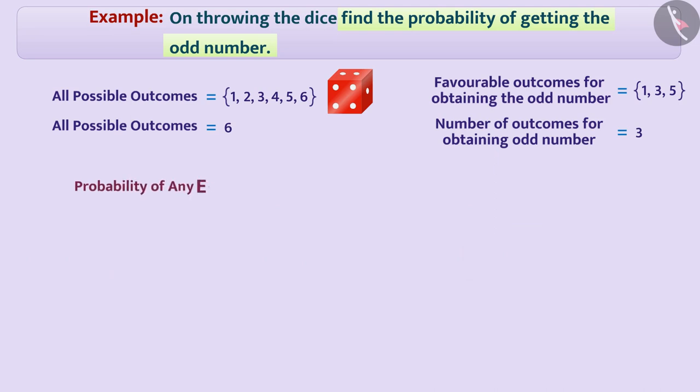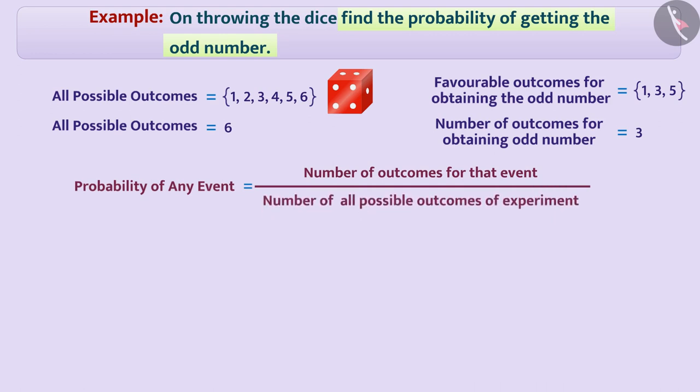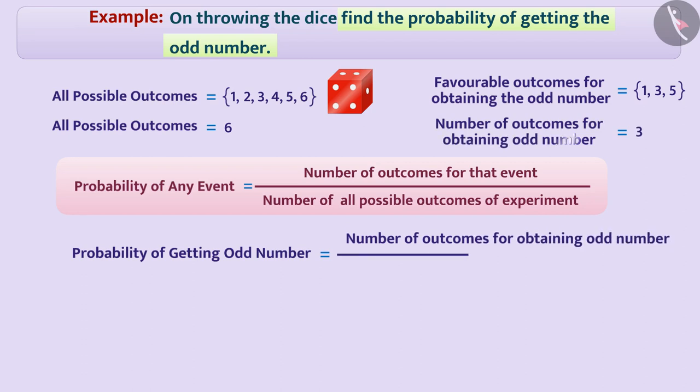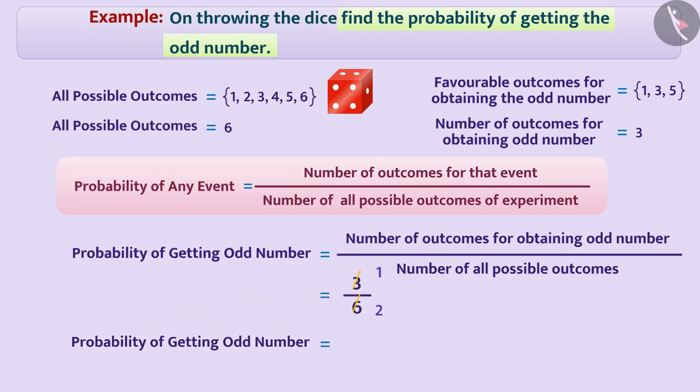Probability of any event is equal to number of outcomes for that event divided by number of all possible outcomes of the experiment. Hence, the probability of getting the odd number is number of outcomes for obtaining odd number divided by number of all possible outcomes of the experiment. In this way, the probability of getting the odd number is 1 by 2.